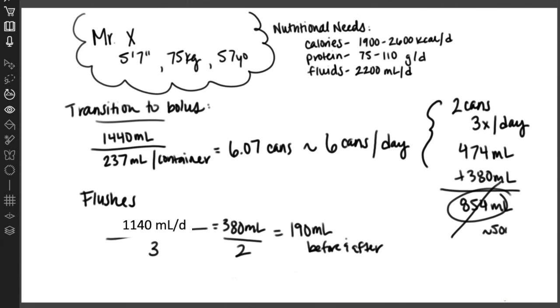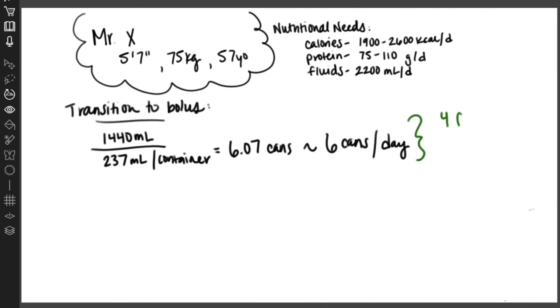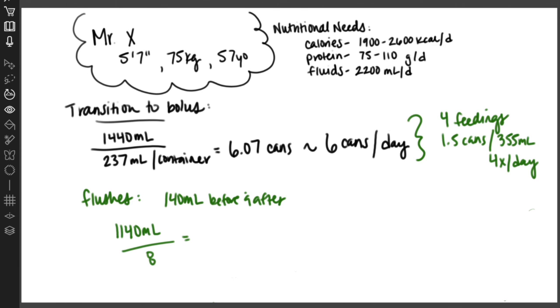With Mr. X, we can either consider spreading out his feedings to four feedings a day or spread out his water flushes, meaning he could give himself flushes throughout the day or with medications and not with the three feedings. If we split his feedings into four feedings, we could advise him to give himself one and a half cans or about 355 milliliters of formula four times a day. To modify our flushes, we would advise him to flush with 140 milliliters before and after each feeding. We got this 140 milliliters by taking our total flush volume of 1,140, dividing that by eight because we're flushing before and after four times. That would be 142 milliliters. We'll just round down to 140 to give Mr. X an easier number to measure.